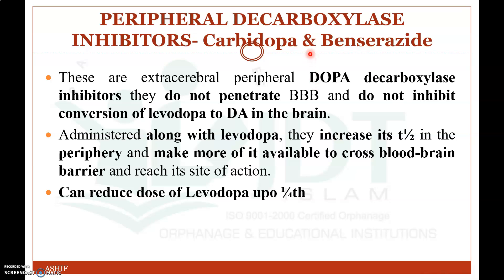The next drug class is peripheral decarboxylase inhibitors like carbidopa and benserazide. When levodopa is used, it may be decarboxylated by the peripheral decarboxylase enzyme before it penetrates the blood-brain barrier. To prevent this peripheral decarboxylation, we use carbidopa or benserazide along with levodopa. Importantly, carbidopa and benserazide do not penetrate the blood-brain barrier and therefore do not inhibit the conversion of levodopa to dopamine in the brain.